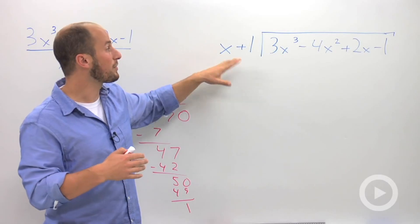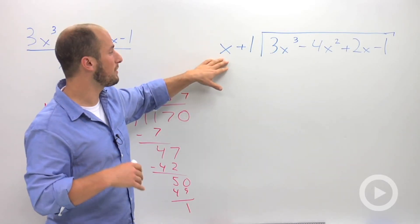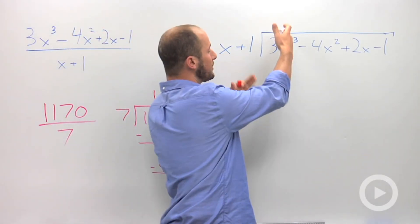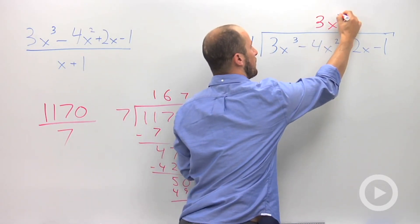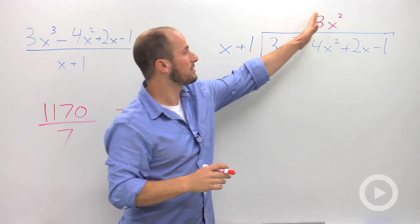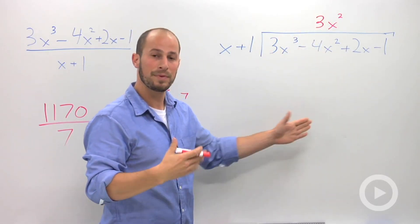sorry, 3x cubed from x, we need to multiply it by 3x squared. So, I always try to line up my powers, so I'm going to put 3x squared right there. So I have all my squareds in a column right here. Okay?